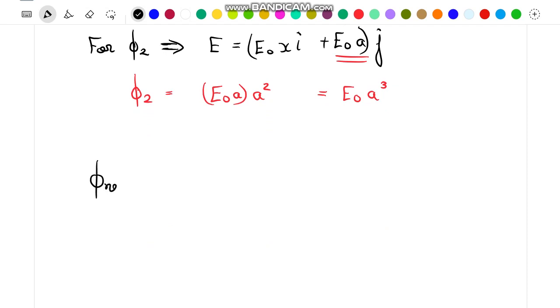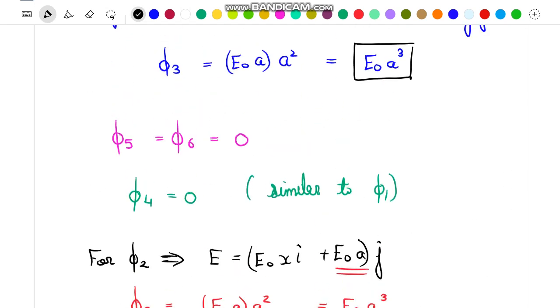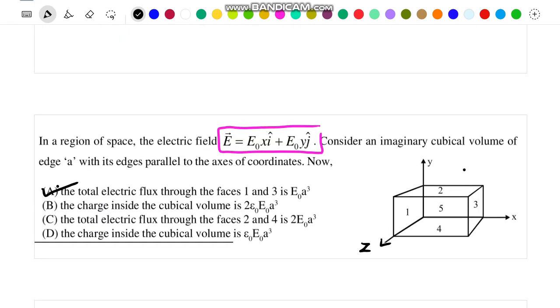Now we can add all this flux in order to find the net flux, which comes out to be equal to 2E₀a³, which is equal to Q_in over ε₀ as per Gauss's law. So from here we can write the value of Q_in will be equal to 2E₀a³ε₀, and this matches with option B, which is again our desired result.